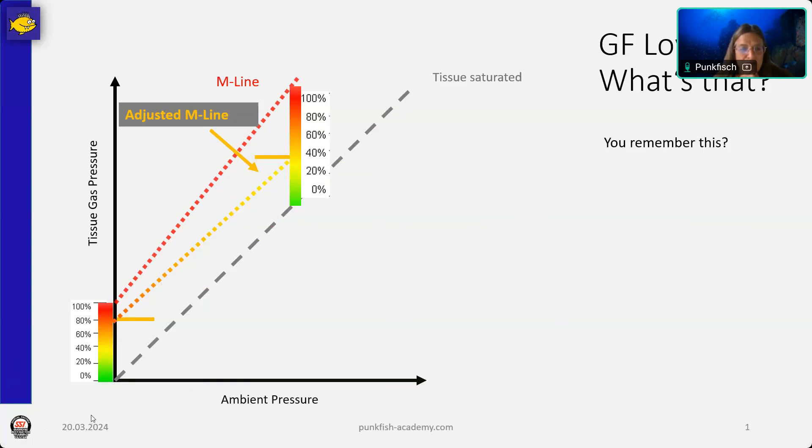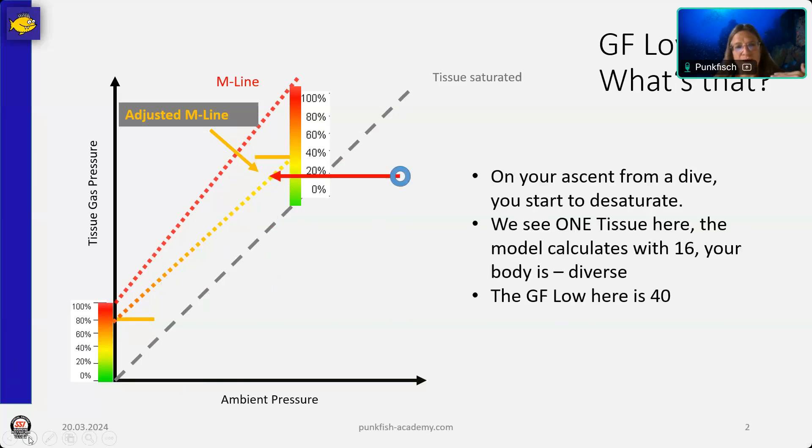So if we want to see our ascent, we have a tissue, just some random tissue. At the beginning of the ascent, this will be one of the faster tissues or even the fastest. And when we start our ascent, once we cross, we are saturated to a certain point, we start to ascend.